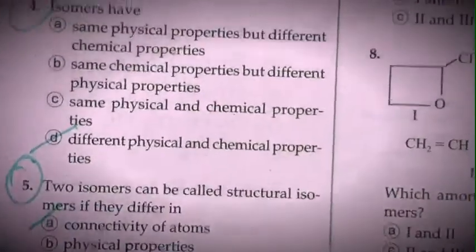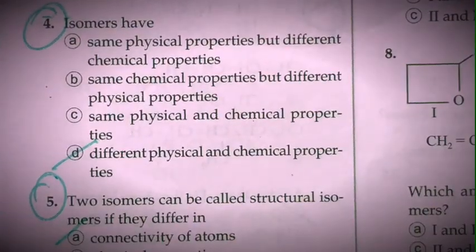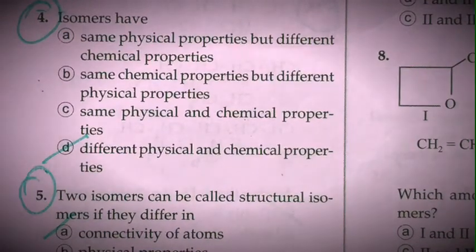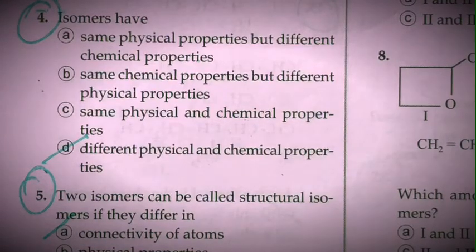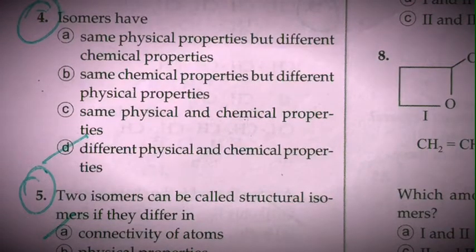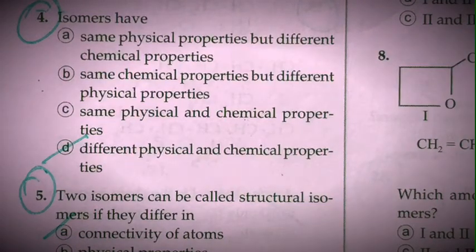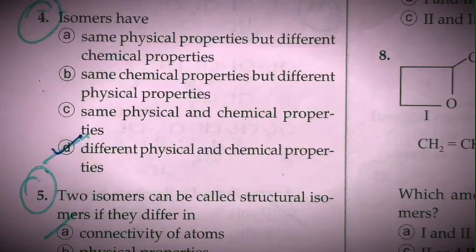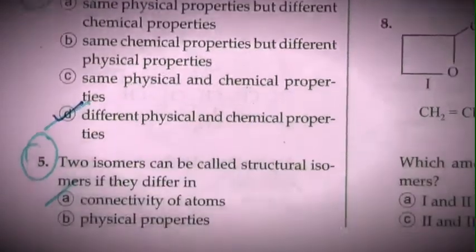Now come to the fourth problem: isomers have... The first option, same physical properties but different chemical properties — not correct, because isomers have different physical and chemical properties. Second, same chemical properties but different physical properties — also not correct. Option C, same physical and chemical properties — no. Option D, different physical and chemical properties — absolutely correct. So D is the correct answer.